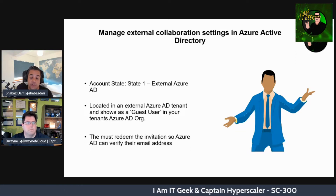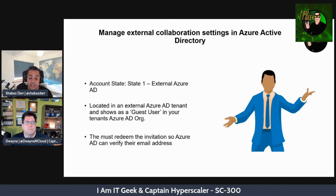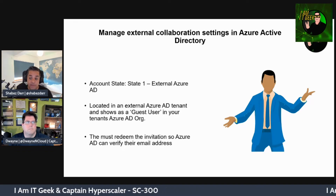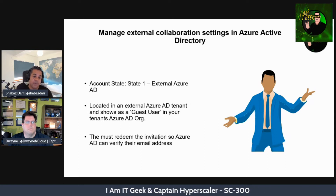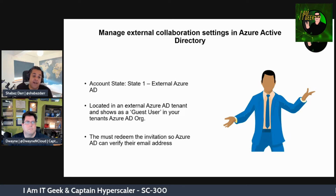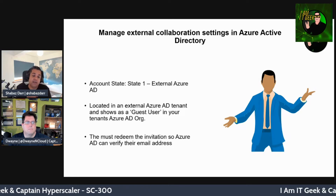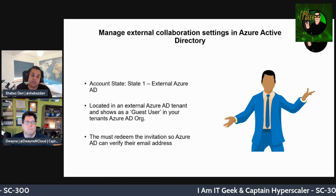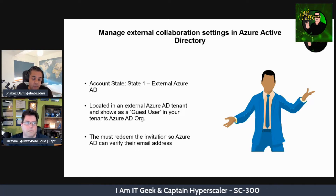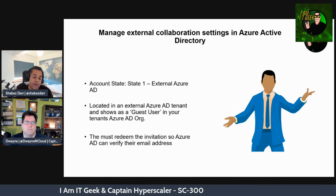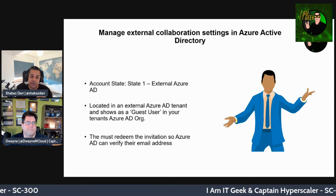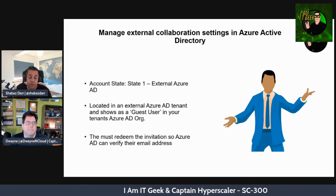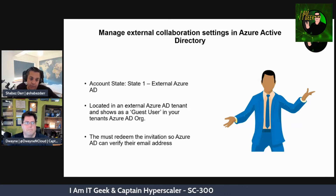Account state one is the external Azure AD. This is where an object is homed in an external Azure AD tenant — a cloud-based identity. They show up as a guest user in our Azure tenant. When signing in, the B2B user uses their own Azure AD account — their UPN from their own domain, such as dwayne@hyperscale.com — not an account from our inviting organization's tenancy.